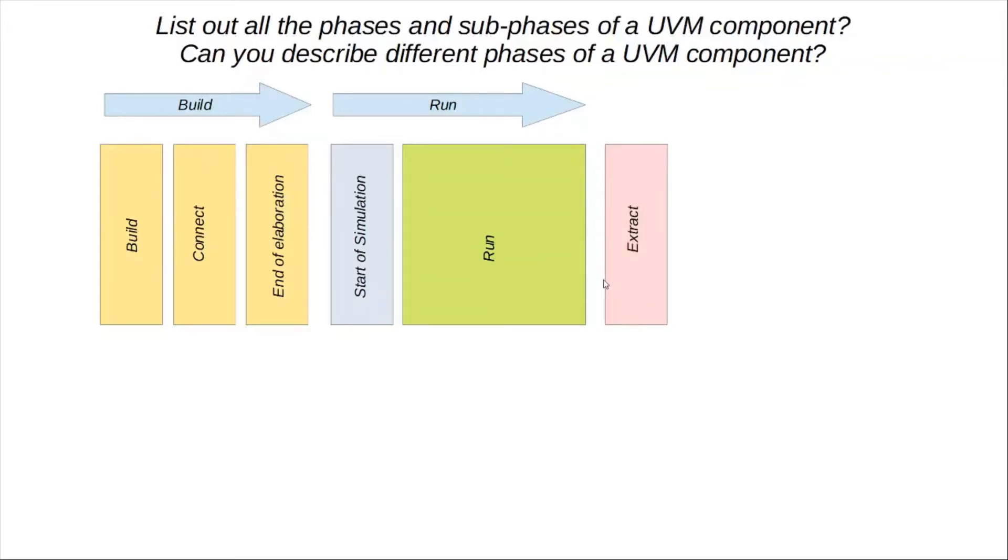The next phase is again a bottom-up function which is used to extract and properly format scoreboard information so that it's ready for the next phase, which is the check phase. Check phase is again a bottom-up function that compares the actual output, which could be the RTL output, with the expected data output from a model or something like that, and it determines what the mismatches and errors are. Then the next phase in line is called the report phase, also a function which is used to depict results of the simulation or to write them into a file. This includes errors from various checkers and the overall test status summary gets reported.